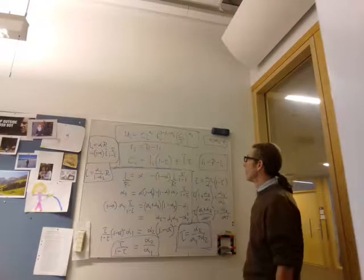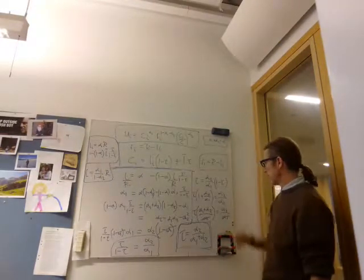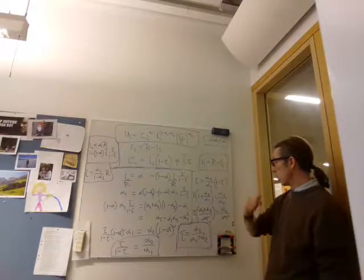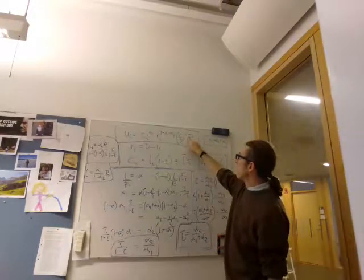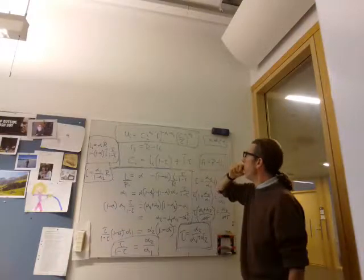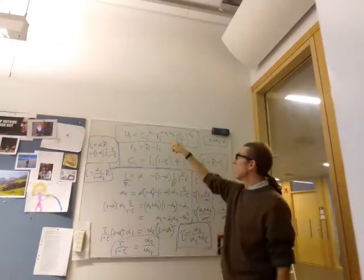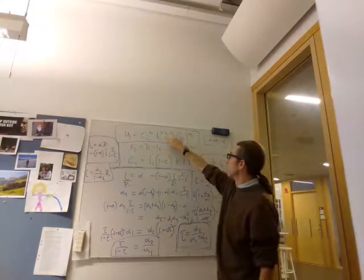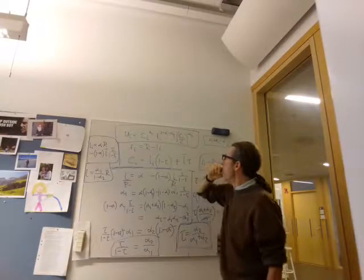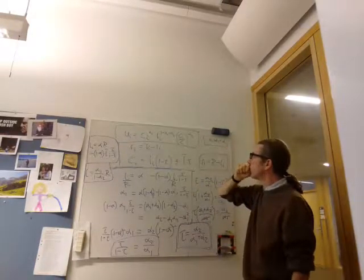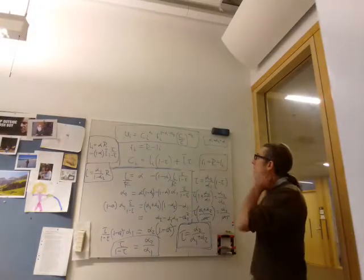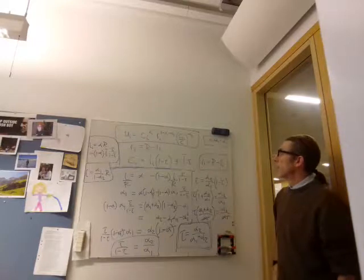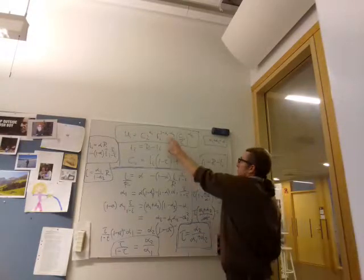What if alpha 2 is 1? Then alpha 1 has to be 0, doesn't it? Because they can't add up to more than 1.